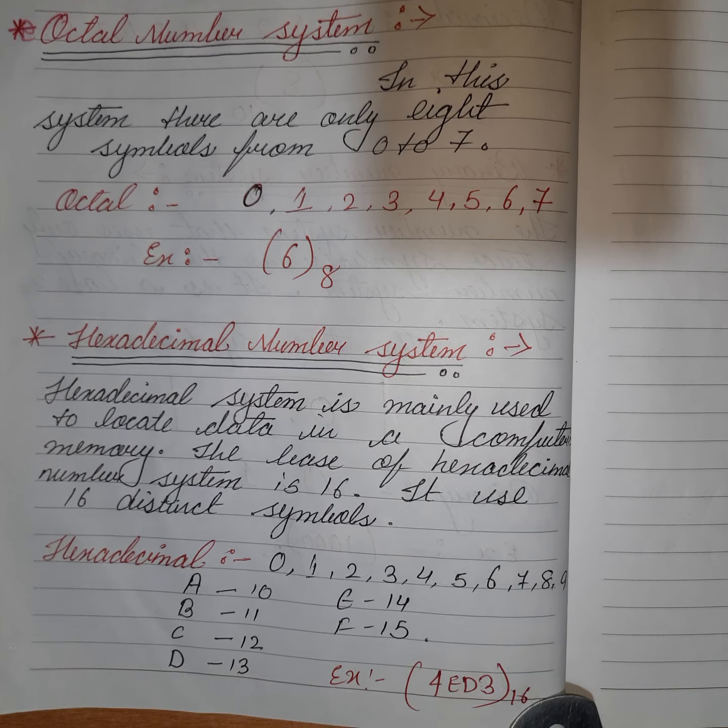So we have learned there are four types of number systems: decimal, binary, octal, and hexadecimal. Decimal has 10 distinct symbols from 0 to 9, so the base is 10. Binary has only two symbols — 0 and 1 — so the base is 2. Octal has symbols from 0 to 7, giving a total of 8, so the base is 8. Hexadecimal uses 0 to 9 plus A to F representing 10 to 15, making a total of 16, so the base is 16.